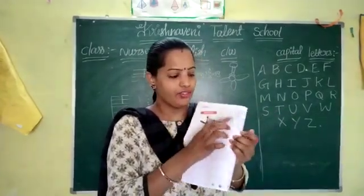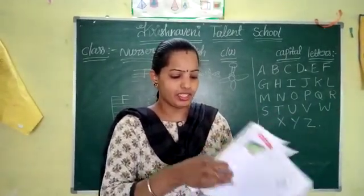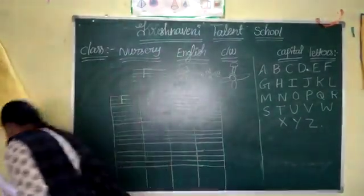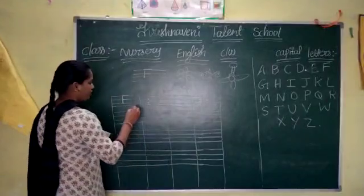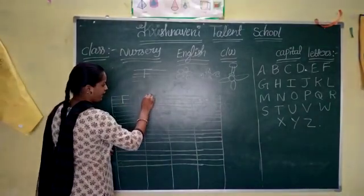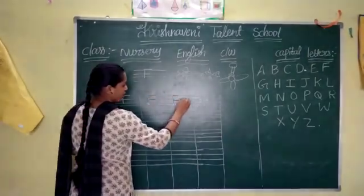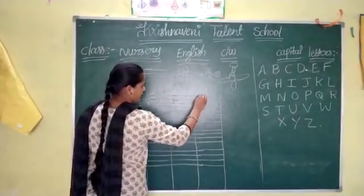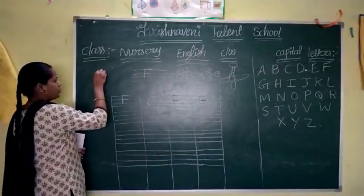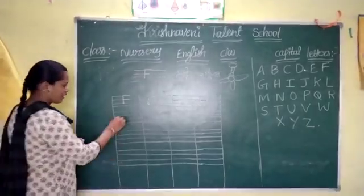Fan and Fish. Yes children, page number 37 is the class for your children. Okay, see the board and write. So now how we write F — first we have to raise this. Okay, first take one standing line and take two sleeping lines like this.